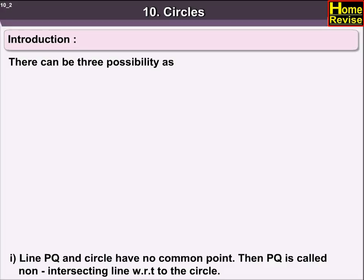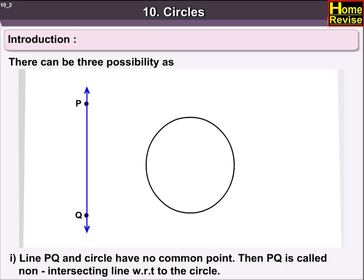One: Line PQ and circle have no common point. Then PQ is called a non-intersecting line with respect to the circle.